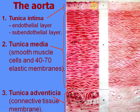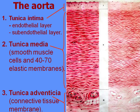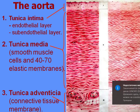The tunica intima is lined by endothelium consisting of flat cells. The sub-endothelial layer is quite thick and consists of loose connective tissue. Cholesterol and calcium salts can precipitate there and produce plaques. The tunica media is quite thick, containing smooth muscle cells which appear pink after staining with hematoxylin-eosin. Smooth muscle cells are not numerous, and between them there are many elastic fibers and membranes — up to 70 elastic membranes.